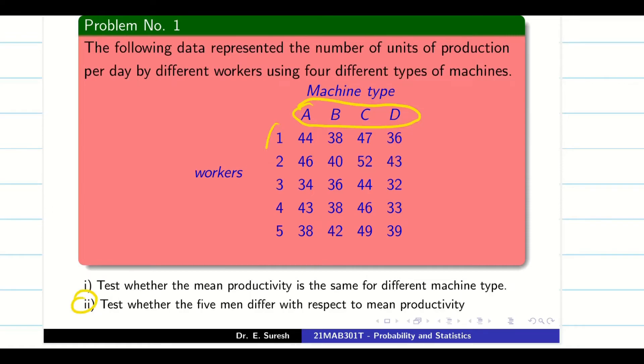The second question is, test whether the five men are same with mean productivity. Now many students do this error in the exams. When I tell to calculate the row and column, there are some students, what they will do? They will count 1, 2, 3, 4, and 5. This 1, 2, 3, 4, 5, this is not a column. It represents the worker number count. Similarly, this A, B, C, D represents the machine.